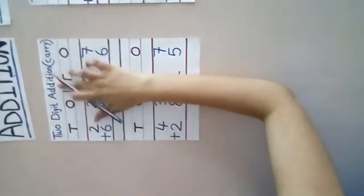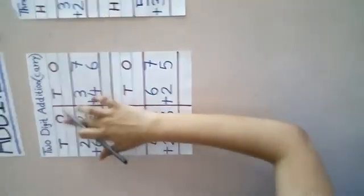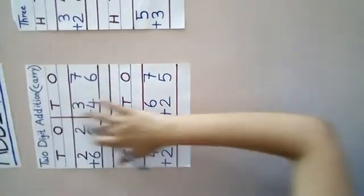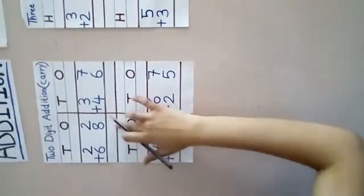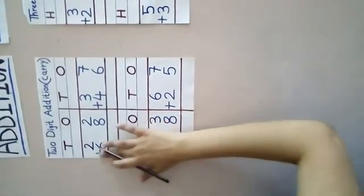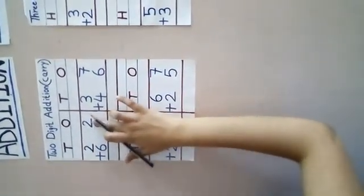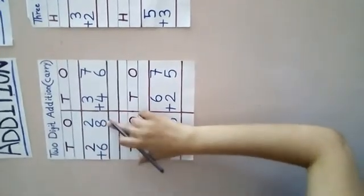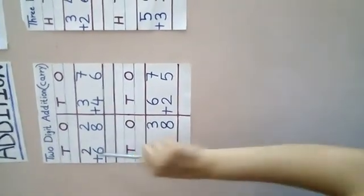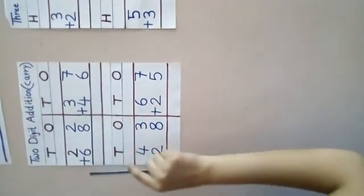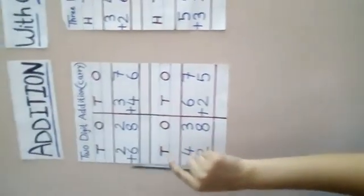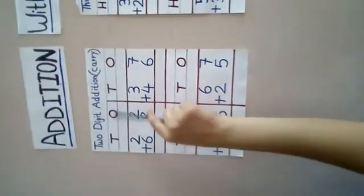Now, see 2 digit addition with carry. Here also, O means 1's and T means 10's. And the rule is same only that we have to start from 1's. See the first one, what is written: 22 plus 68. 22 means 2 10's and 2 1's. We have to add them with 6 10's and 8 1's.